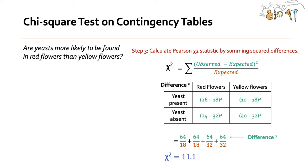The third step is to calculate what we call this Pearson chi-square statistic by summing squared differences. That sounds really intimidating, but really all it is, is wanting to know what is the ratio of what you would expect from what you observed. So what we can do is subtract our expected from our observed, square it.